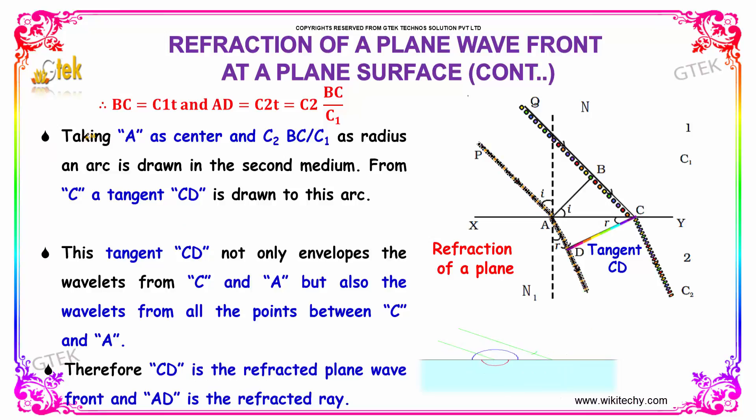As indicated, BC is equal to c1 into t and AD is equal to c2 into t. Because BC is traveled in the c1 environment and AD is traveling in the c2 environment, it is c2 into BC divided by c1.